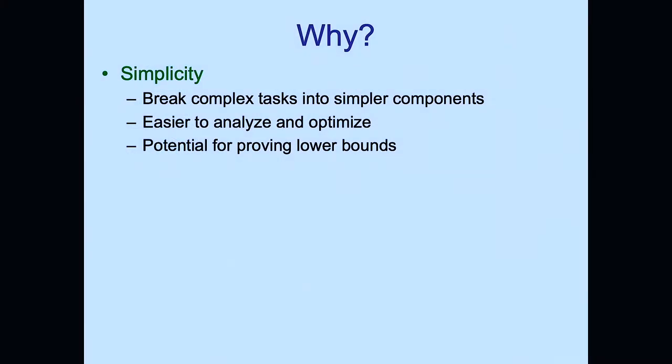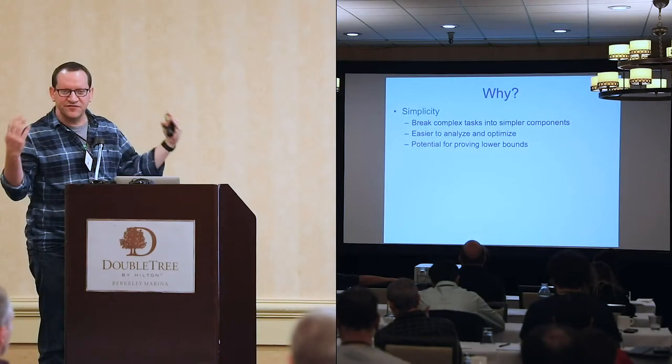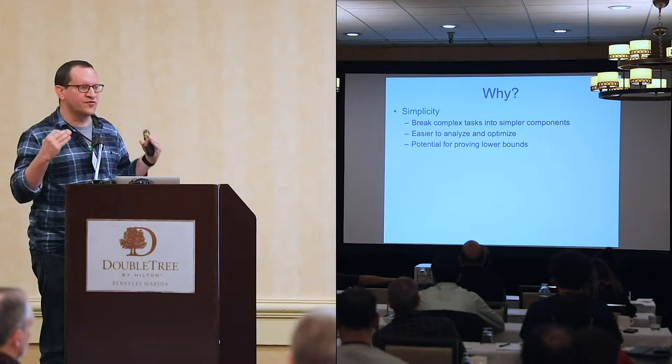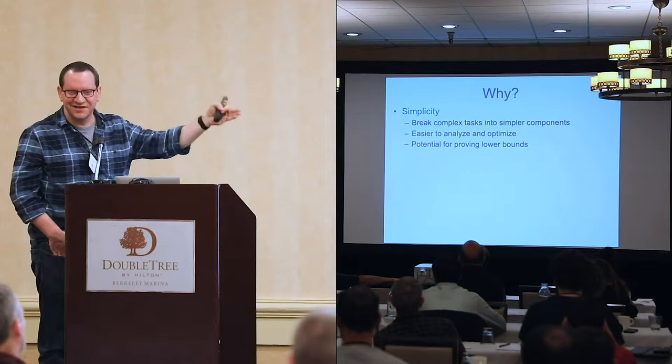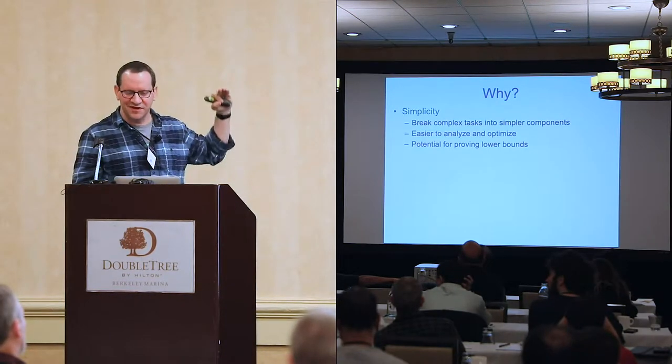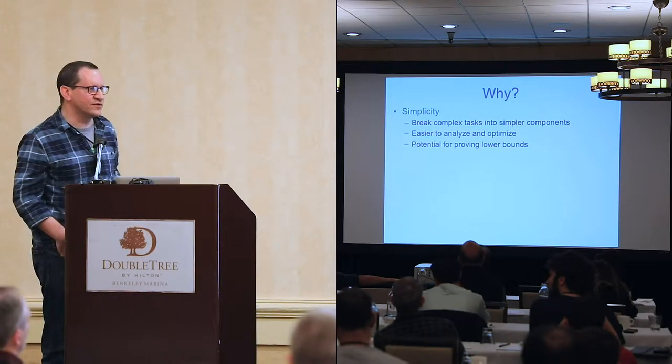Why advocate this modular approach? First, simplicity: because the information-theoretic component forms the meat of the zero-knowledge proof, we can hope to have a tight understanding of its efficiency. It's very difficult to get such tight understanding for the final cryptographic protocol, but for an information-theoretic proof system we can prove lower bounds — and failing to prove lower bounds sometimes gives ideas for upper bounds we wouldn't have thought of otherwise.